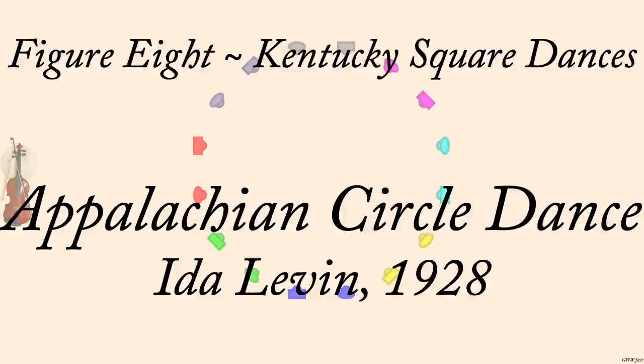Figure Eight, published in Kentucky Square Dances, collected by Ida Levin in 1928.